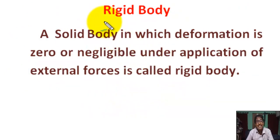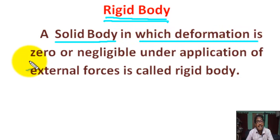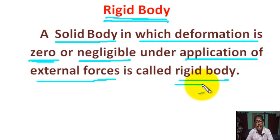Now, what is rigid body? A solid body in which deformation is zero or negligible under application of external forces is called rigid body. A rigid body is one in which all particles remain at fixed distance from each other irrespective of the forces that act on the body. A rigid body does not deform under the action of forces.